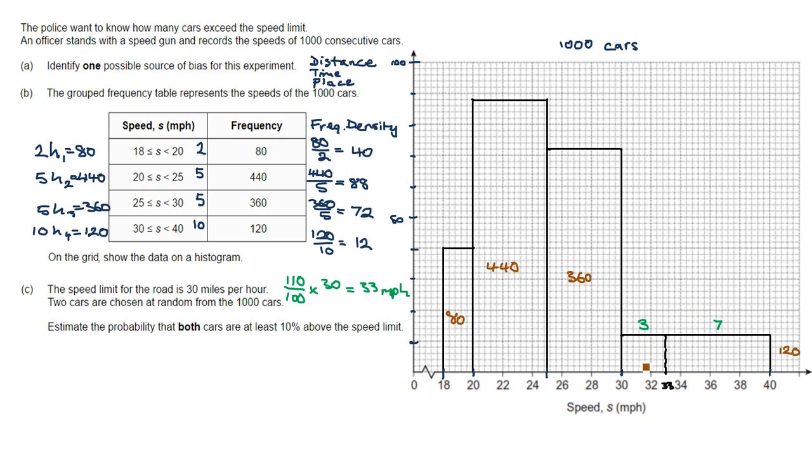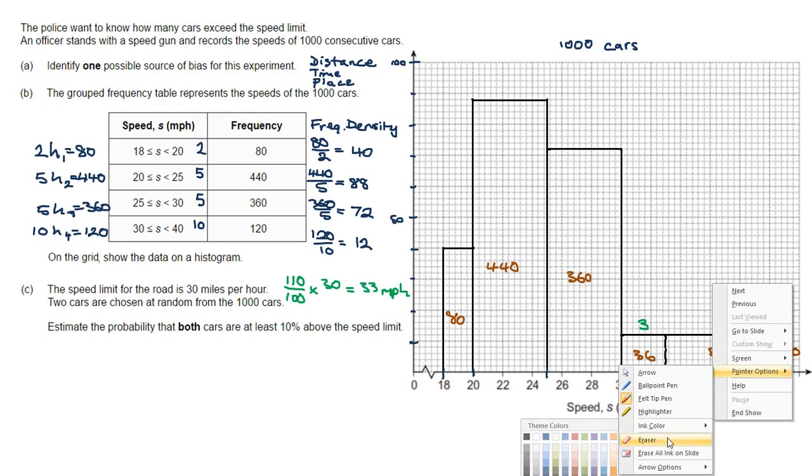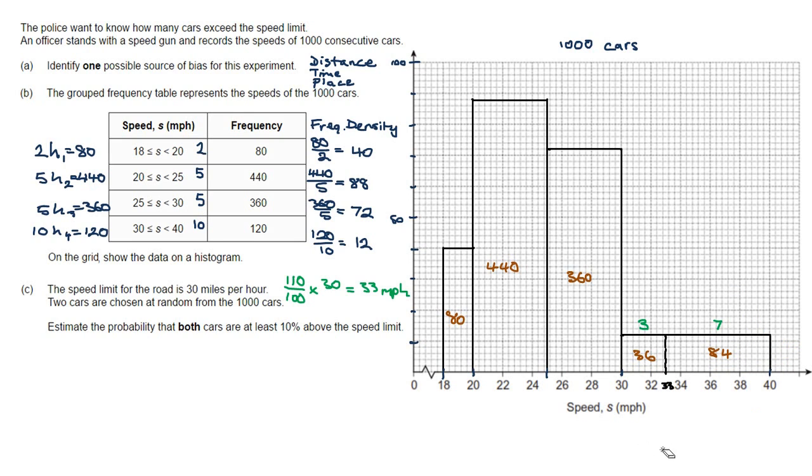We've got in here, we've got 3 times 12, which is 36. And in here, we could do it a number of different ways. But 7 times 12 is going to be double this, 72 plus another 12, 84. And let's just check to finish that that equals 120. So 30 plus 80 is 110. 6 plus 4 is 10. So 10 plus 110 is 120. So that must be correct.